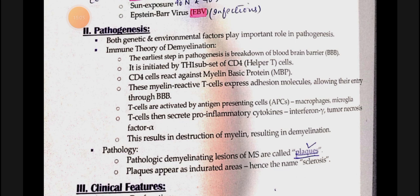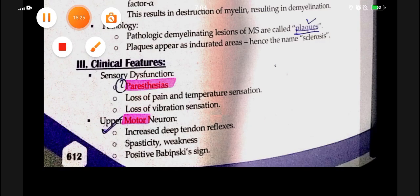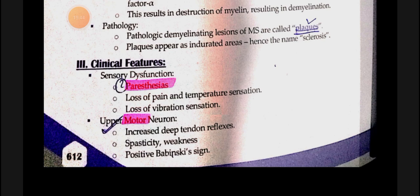Clinical features of multiple sclerosis: sensory dysfunction causes loss of pain, temperature, and vibration sensation. Upper motor neuron involvement causes increased reflexes, increased tone, spastic paralysis, and positive Babinski's sign. Autonomic dysfunction causes sexual dysfunction, urinary incontinence, and bowel problems. Note: lower motor neuron is not involved since peripheral nerves are not affected.